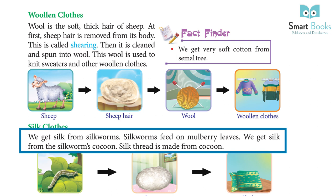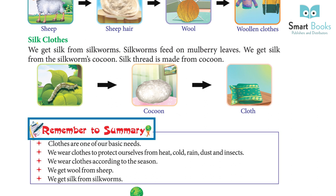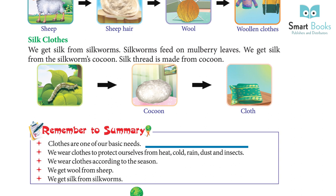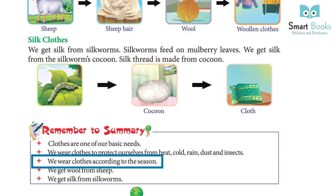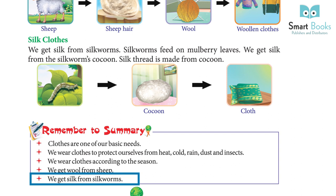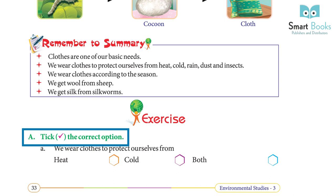We get silk from the silkworm's cocoon. Silk thread is made from the cocoon. Remember: clothes are one of our basic needs. We wear clothes to protect ourselves from heat, cold, rain, dust, and insects. We wear clothes according to the season. We get wool from sheep and silk from silkworms.